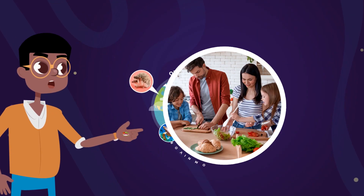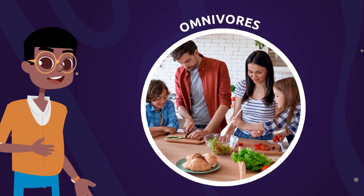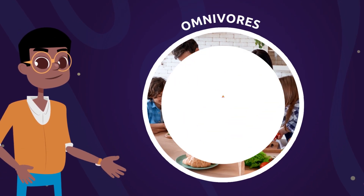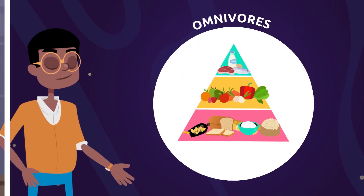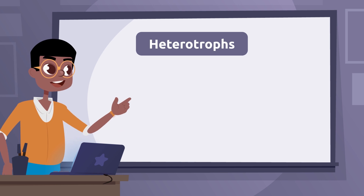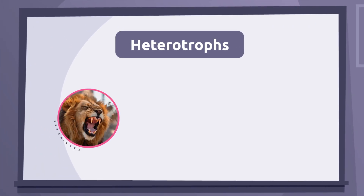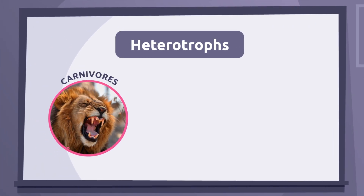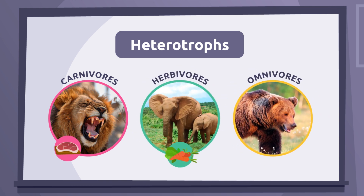Omnivores eat what they can find, so their diet may vary from one day to another. Human beings are considered omnivores because they feed on any type of organism and have a varied diet. As we've seen, carnivores feed on meat, herbivores eat plants, and omnivores eat both meat and plants.